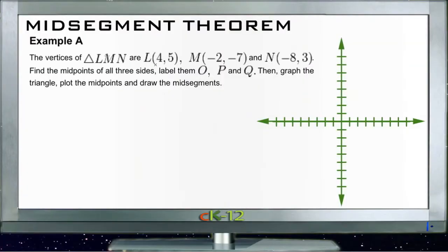Alright, let's take a look at the example questions for our midsegment theorem. Recall that the midsegment theorem tells us that if we have a triangle and we mark the midpoints of two sides, a line drawn between them will be parallel to the base and equal to one half of the base. That's the midsegment theorem. So let's see how it applies to the example questions here.